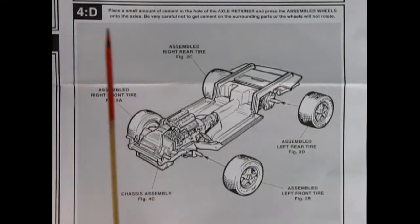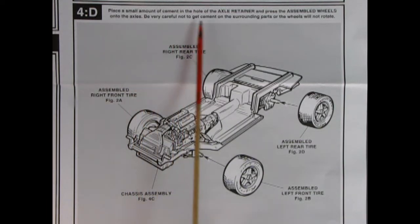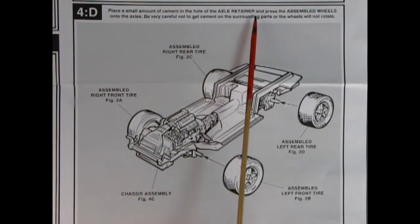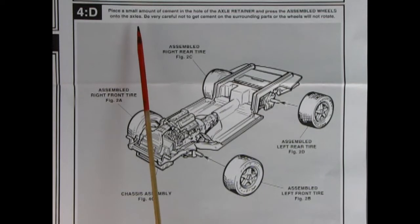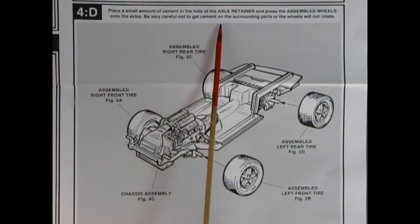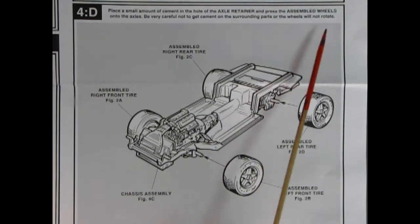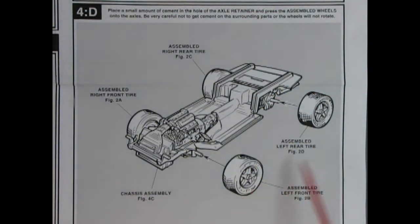Now in panel 4D it says place a small amount of cement in the hole of the axle retainer and press the assembled wheels onto the axles. Be very careful not to cement on the surrounding parts or the wheels will not rotate. And I fully agree. You want your wheels to spin on this so it'll roll right off the shelf.